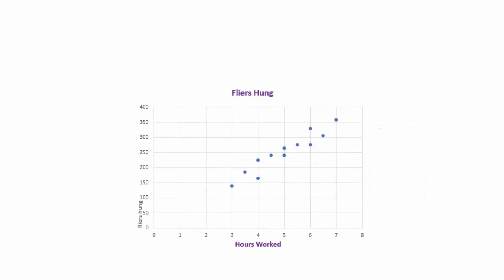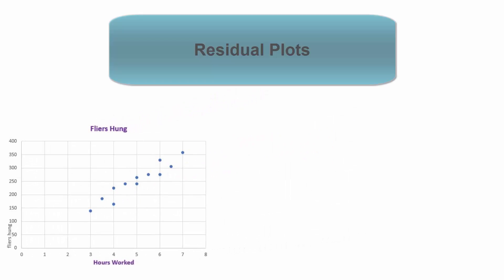Here is data that is linear for the number of flyers hung per hour. Regardless of the R value, we confirm linearity by observing the scatter plot. Residual plots can provide the same information.